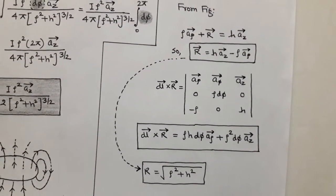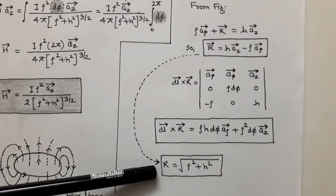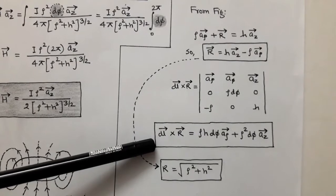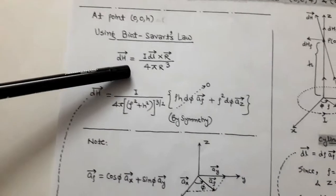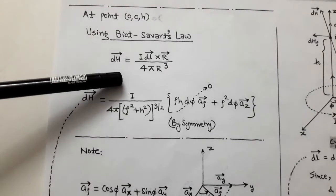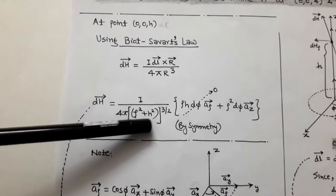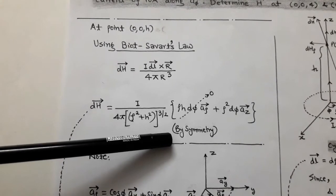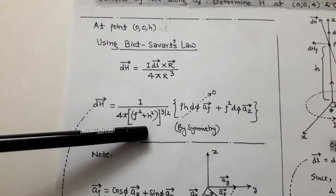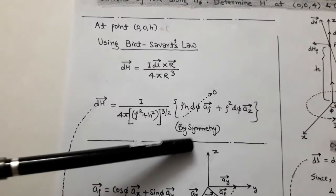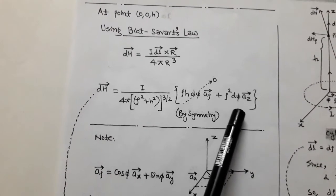After obtaining dl × r and the magnitude of r, we substitute into Biot-Savart's law. We get: dH vector = I / (4π(ρ² + h²)^(3/2)) × [ρh dφ â_ρ + ρ² dφ â_z]. The magnitude is under root, and since we take the cube in the denominator, it becomes (ρ² + h²)^(3/2). By symmetry, the first term becomes 0.